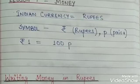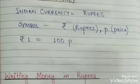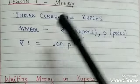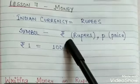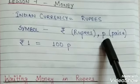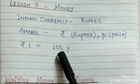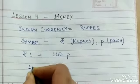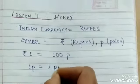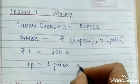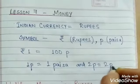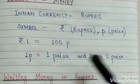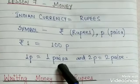Without money, the shopkeeper will not give you things. Indian currency is in the form of rupees and paise. The symbol we use for rupees is ₹ and for paise is a small 'p'. We know that one rupee is equal to 100 paise. One 'p' is read as one paise, and two 'p' is read as two paise. Paise is the plural form of paise.